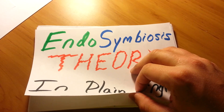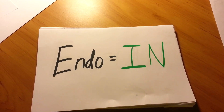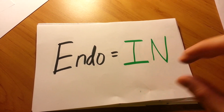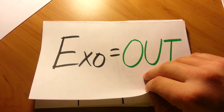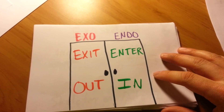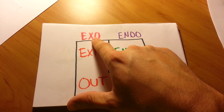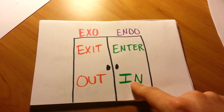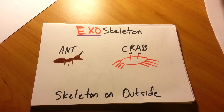Now endosymbiosis is a very big word, so let's break it down. Endo comes from the Latin word which means 'in,' that is the exact opposite of the Latin word exo which means 'out.' You actually use these words on a daily basis. The word exit comes from the Latin word exo which means out, and the word enter comes from the Latin word endo which means in.